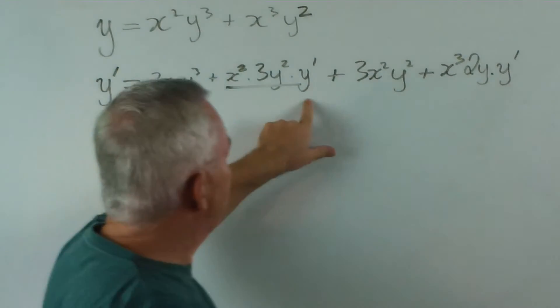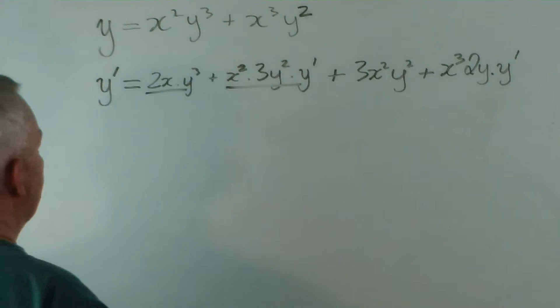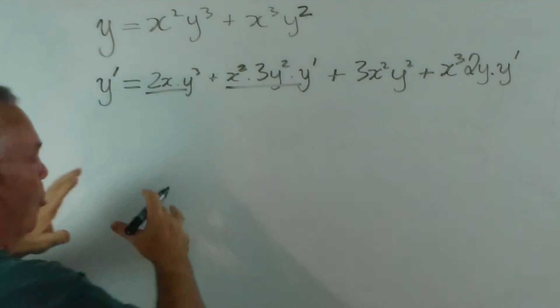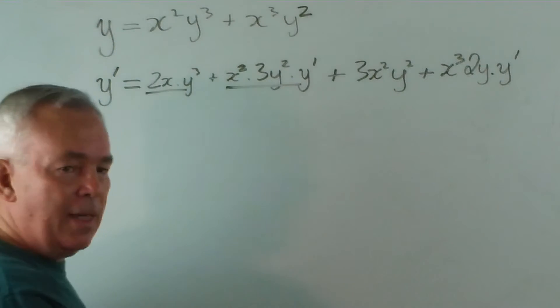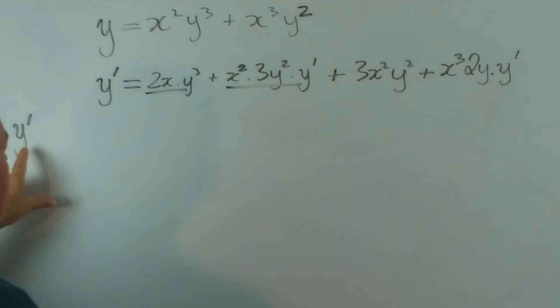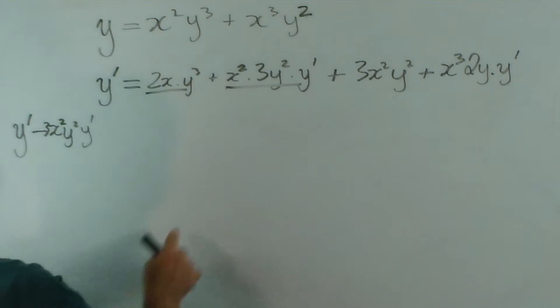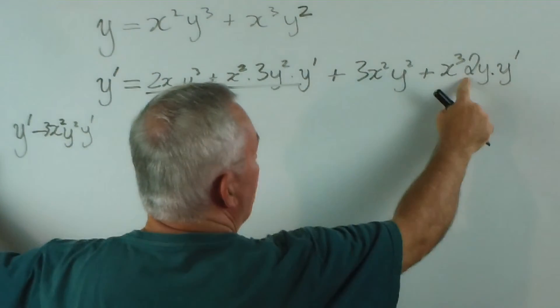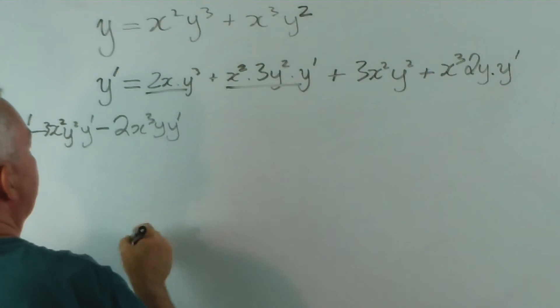Looking at it, we have y dash in three separate locations. We're going to collect those together and put everything else on the right-hand side. I'm leaving the y dash here. I want to grab this and take it over this side, so it's going to be minus 3x squared y squared y dash. I'll move the 3 to the front. And this one, I'll move the 2 to the front, so it's going to be minus 2x cubed y y dash equals...